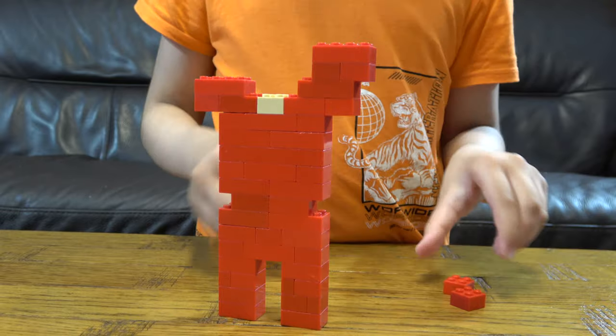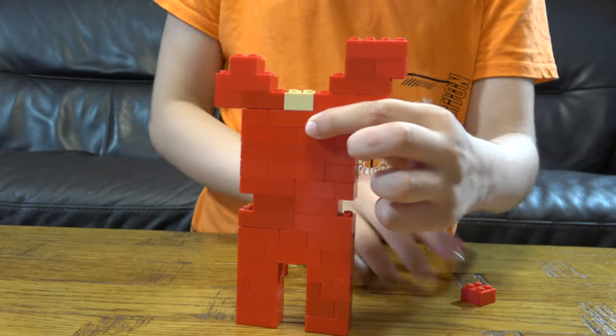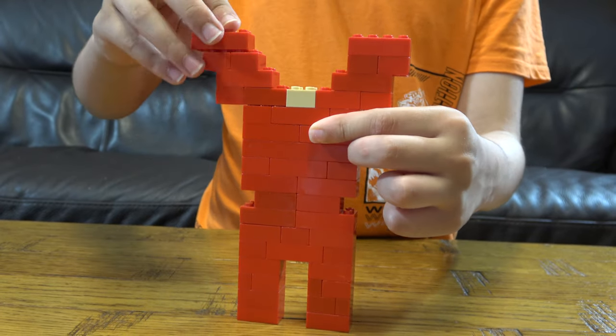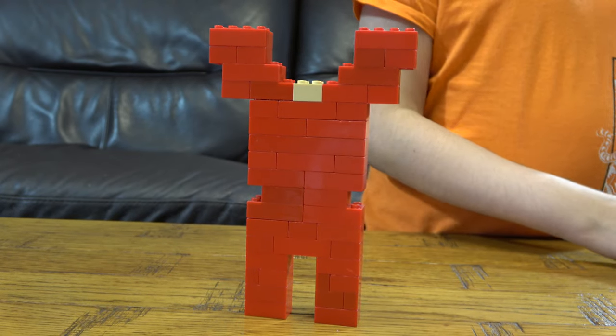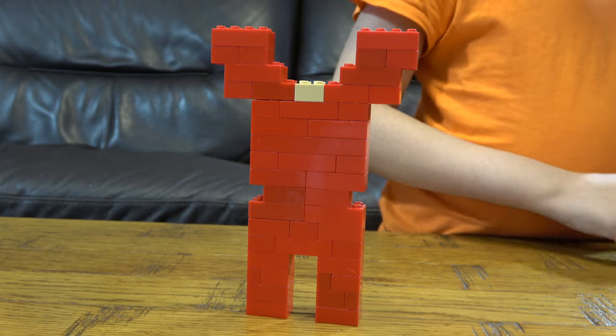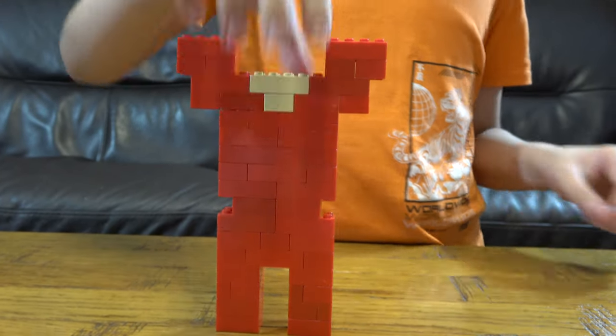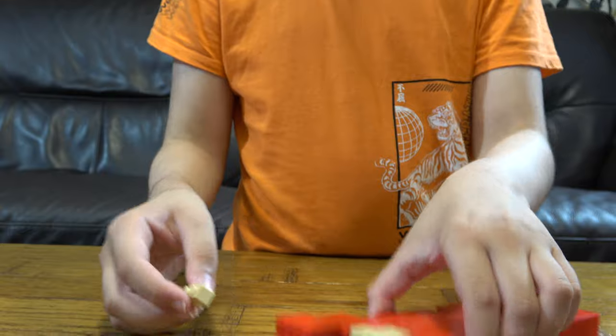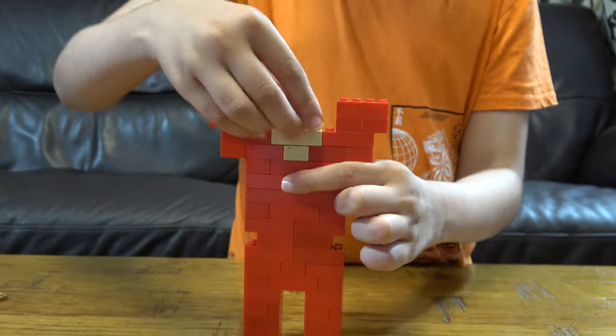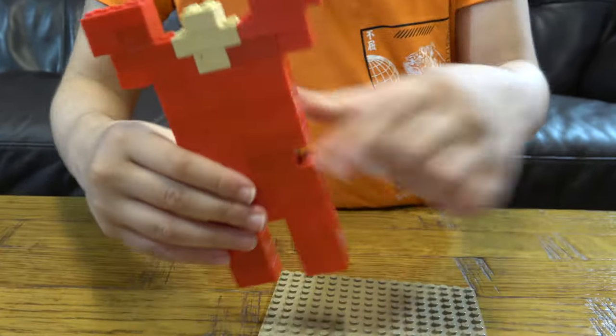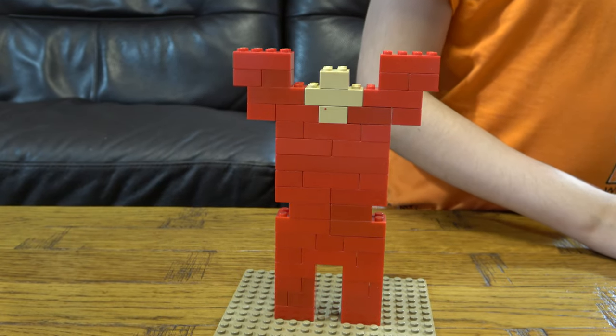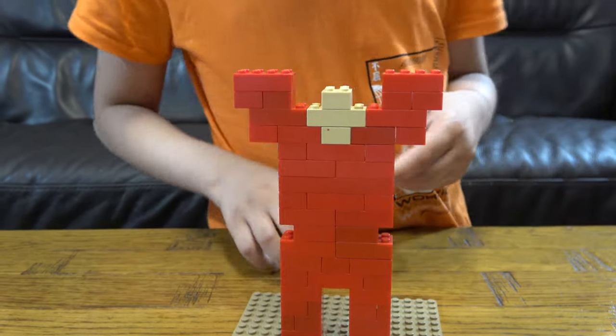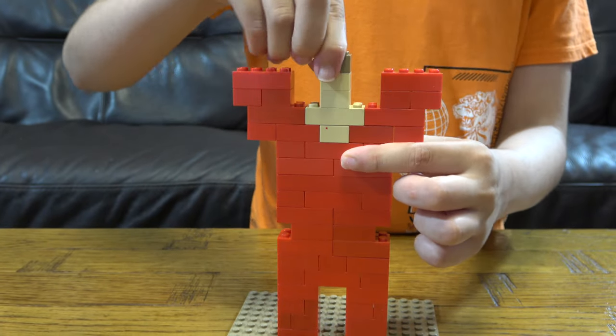Now we have finished the chest plate. Now for the helmet. First thing we need is this, two of these, and also we are going to put them on the stand here. Place this here, that there.